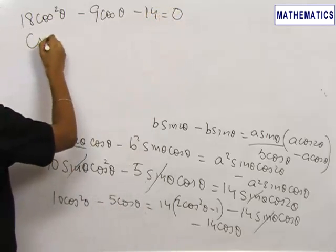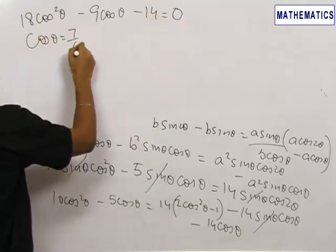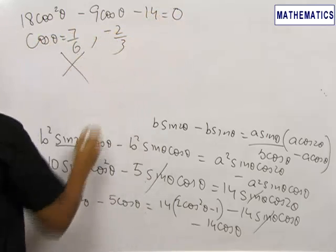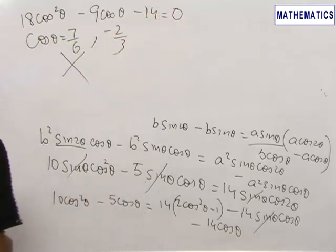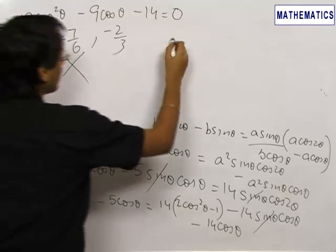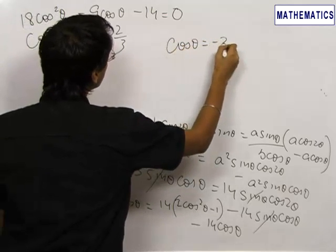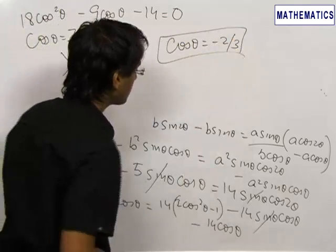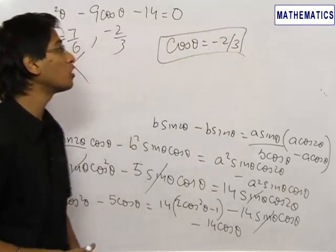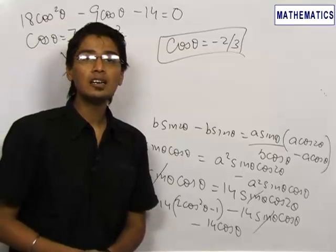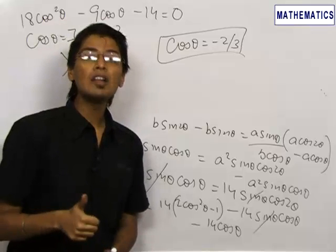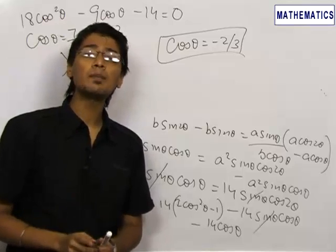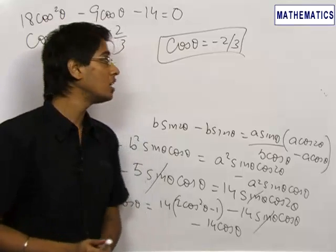On solving for cosθ, we get cosθ equals 7/6 or minus 2/3. This value of 7/6 is obviously incorrect because cosθ is always less than or equal to 1, and hence our value of cosθ comes out to be minus 2/3. Our final answer for the value of cosθ, such that the normal made at point P with parameter θ meets the ellipse again at point Q with parameter 2θ, is cosθ equals minus 2/3.